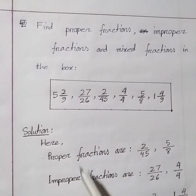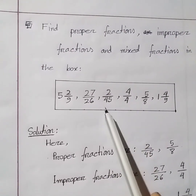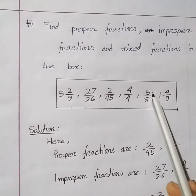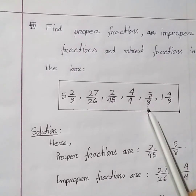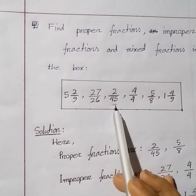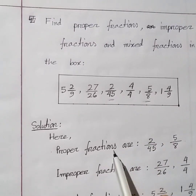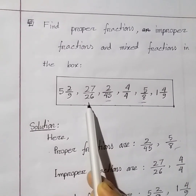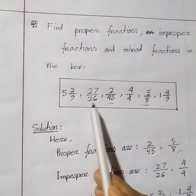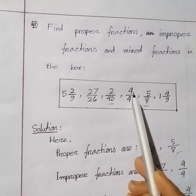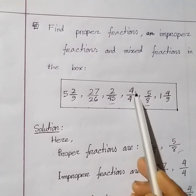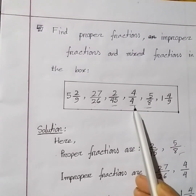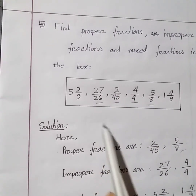Let's check your answer. Proper fractions are 2 by 45 because 2 is smaller than 45, and 5 by 8 because 5 is smaller than 8. That's why 2 by 45 and 5 by 8 are proper fractions. Improper fractions are 27 by 26 because 27 is greater than 26, and 4 by 4 because the numerator and denominator are equal. That's why these are improper fractions.